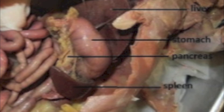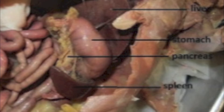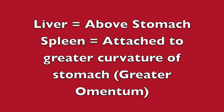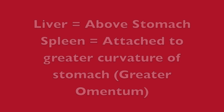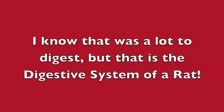The liver in a rat produces bile, which is necessary for proper digestion of most fats. The spleen, along with the liver, removes old red blood cells from circulation and breaks them down. The products of the breakdown are secreted into the stomach by the spleen, and into the duodenum by the liver. The pancreas secretes many digestive enzymes into the small intestine. The liver is above the stomach; the spleen is attached to the greater curvature of the stomach via the greater omentum; and the pancreas is embedded in the mesentery proper and the greater omentum.